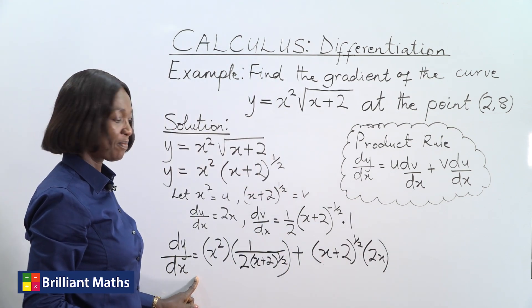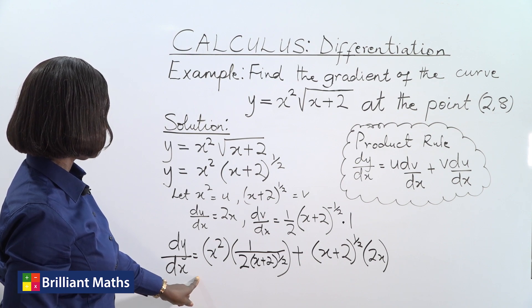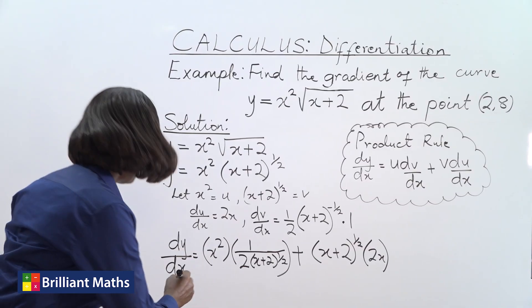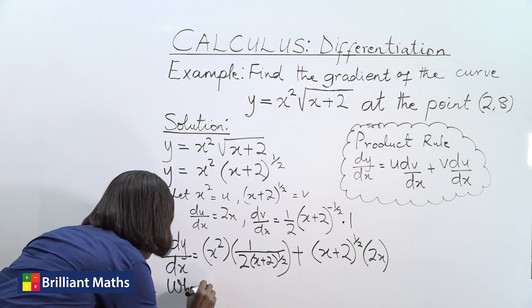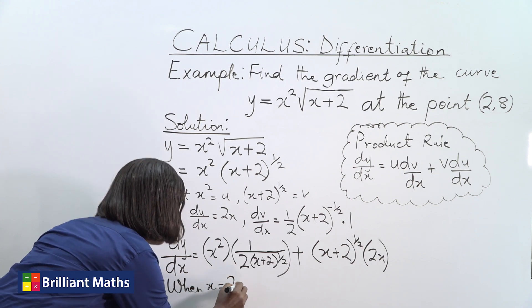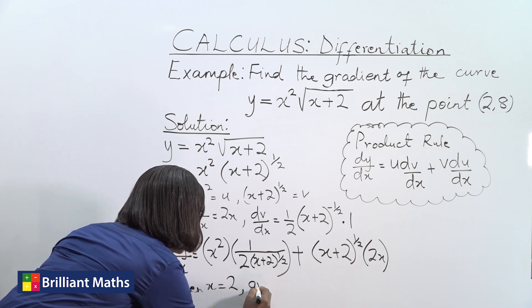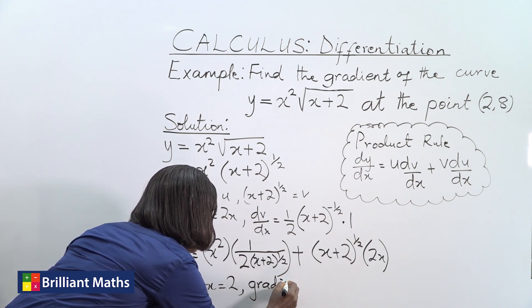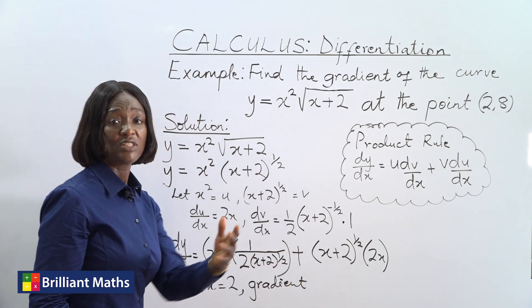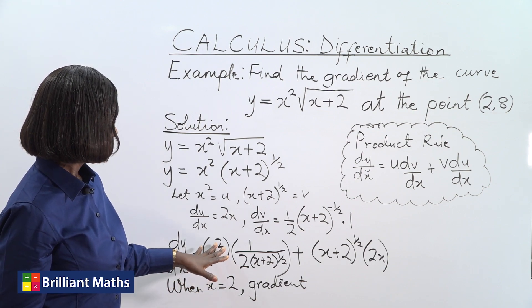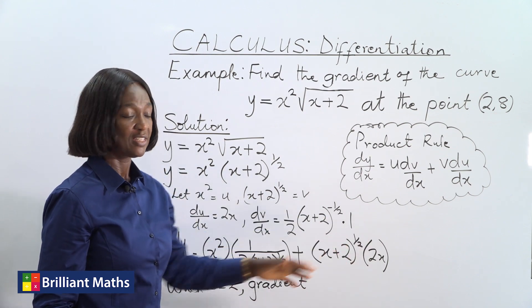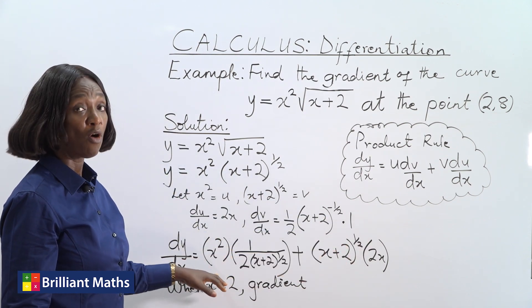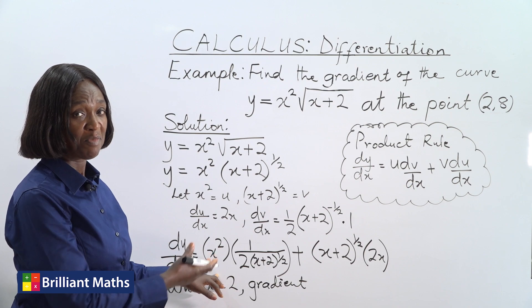Let's simplify this. So when x is 2, the gradient of this curve will be, we're replacing all the x with 2. We're substituting the value of x. So x is 2, 2 squared is 4. Let's do it mentally.